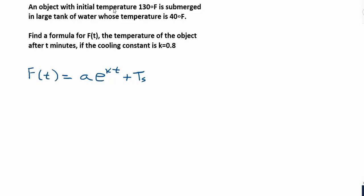In this problem we have an object with an initial temperature of 130 degrees Fahrenheit submerged in a large tank of water whose temperature is 40 degrees. We are to find a formula for f of t, the temperature of the object, after t minutes if the cooling constant is k equals 0.8.